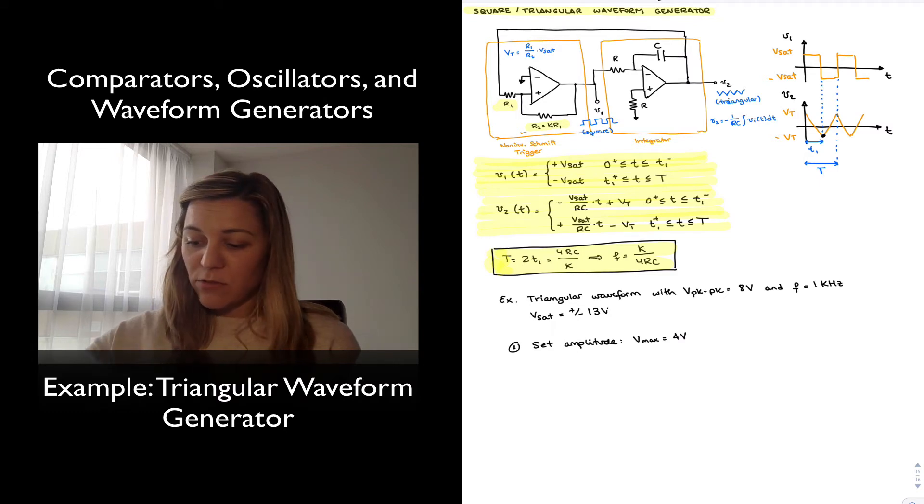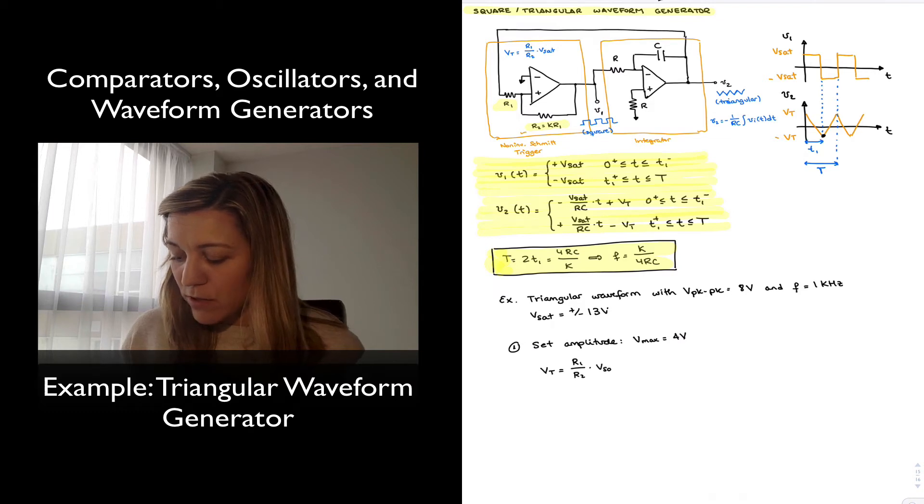Now, the magnitude is set by Vt, and we see Vt is equal to R1 over R2 times the saturation voltage. So R1 and R2 are the resistors that are going to determine the amplitude of our circuit.